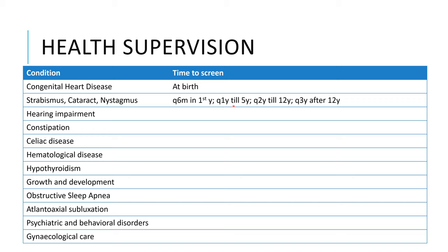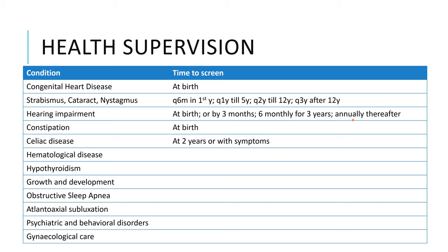Ophthalmological evaluation should then continue every year until age five (four more times), every two years until age 12 (three more times), and every three years thereafter. Screen for hearing impairment at birth or by three months, then every six months for three years, and then annually. Screen for constipation and maintain a high index of suspicion. Screen for celiac disease at two years or if symptoms appear. Do a complete blood count after six months and then annually, as Down syndrome children are more prone to hematological diseases like leukemia and megaloblastic anemia.